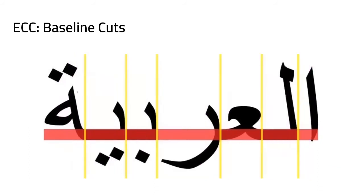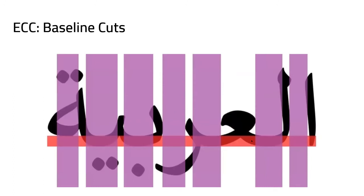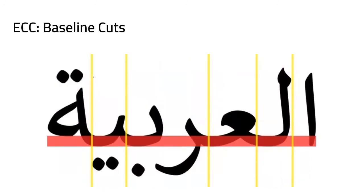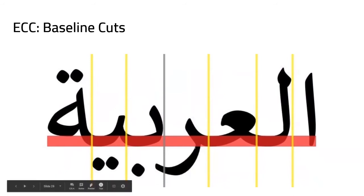At first glance the baseline cuts algorithm works perfectly, correctly segmenting all characters. However, an interesting problem arises when changing the font — the same word with a different font reveals a missing cut in the middle. The reason is that the characters can overlap, and in that PCR all pixels were entirely below the baseline throughout the entire region, giving baseline cuts no opportunity to find the required cut.